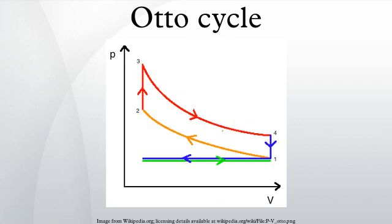In cycle analysis, during processes 1 to 2 the piston does work on the gas, and in process 3 to 4 the gas does work on the piston during those isentropic compression and expansion processes respectively. Processes 2 to 3 and 4 to 1 are isochoric processes. Heat transfer occurs but no work is done on the system or extracted from the system.